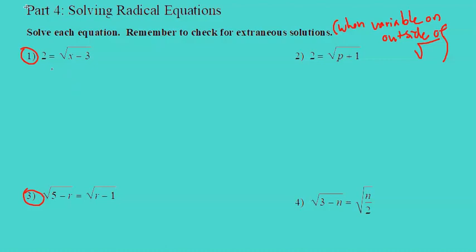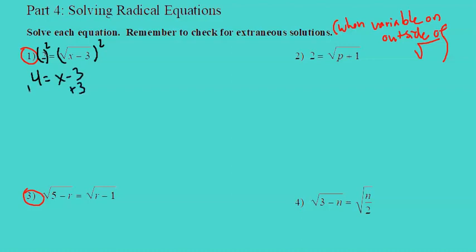Let's look at number 1. We have 2 equals the square root of x minus 3. To get rid of the square root, exponentiate each side by 2. That gives us 4 equals x minus 3. Add 3 to each side, and x equals 7.